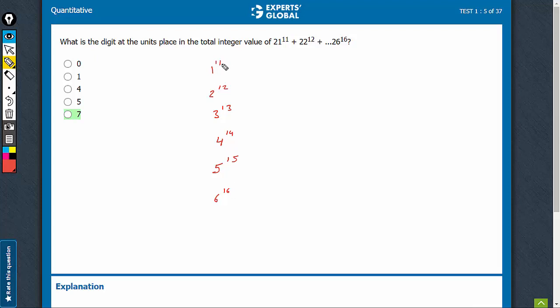The concept is to divide the power by 4. So 11 with 4 gives 3 remainder, so it's 1 raised to power 3 practically. 12 with 4 will give remainder 0. Whenever the remainder is 0, we don't take it as 0, we take it as 4.